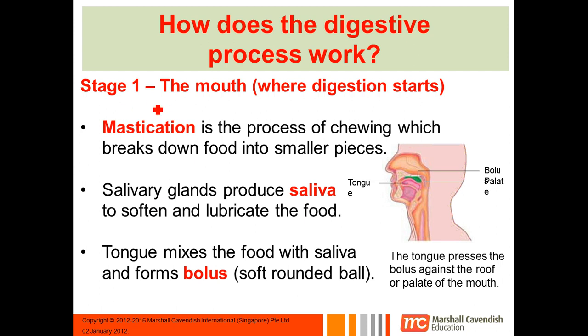Stage one: digestion starts in the mouth. Mastication — that's another word for chewing — so you chew your food and break it down into smaller pieces.